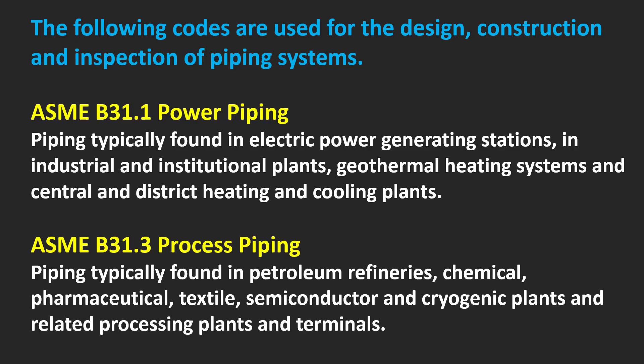The following codes are used for the design, construction, and inspection of piping systems. ASME B31.1 covers power piping — piping typically found in electric power generating stations, industrial and institutional plants, geothermal heating systems, and central and district heating and cooling plants. ASME B31.3 covers process piping — piping typically found in petroleum refineries, chemical, pharmaceutical, textile, semiconductor, and cryogenic plants, and related processing plants and terminals.